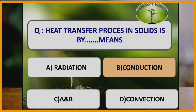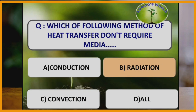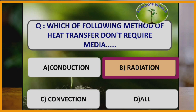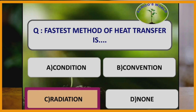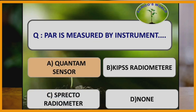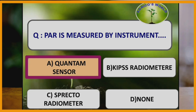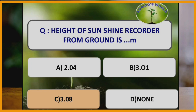The method of heat transfer that does not require any media is radiation. The fastest method of heat transfer is radiation — in radiation, the speed of heat transfer equals the speed of light. Photosynthetically active radiation is measured by a quantum sensor. Height of sunshine recorder from ground is 3.08 meters.